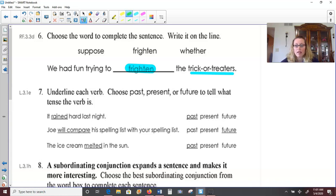Number seven. Underline each verb. Choose past, present, or future to tell the tense of the verb. So it rained hard last night. So what is the action? What did it do? It rained. And if it rained, did that happen in the past, present, or future? A hint is that it was last night, so that would be the past. Joe will compare his spelling test with your spelling test. What is the action here? What will Joe do? He will compare. And if he will compare, it means it hasn't happened yet. So that would be a future tense verb.